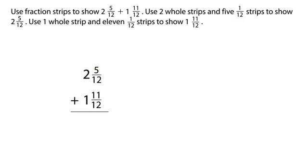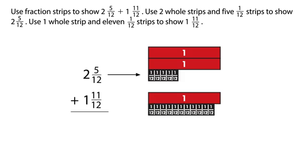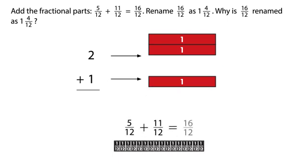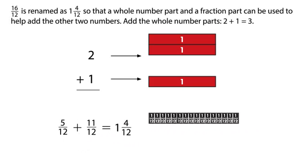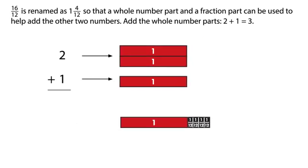Use fraction strips to show two and five twelfths plus one and eleven twelfths. Use two whole strips and five one-twelfth strips to show two and five twelfths. Use one whole strip and eleven one-twelfth strips to show one and eleven twelfths. Add the fractional parts: five twelfths plus eleven twelfths equals sixteen twelfths. Rename sixteen twelfths as one and four twelfths, so that a whole number part and a fraction part can be used to help add the other two numbers.